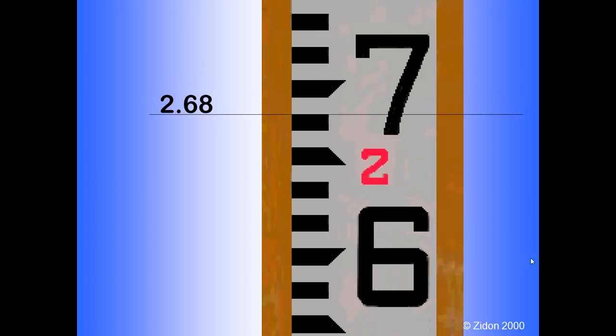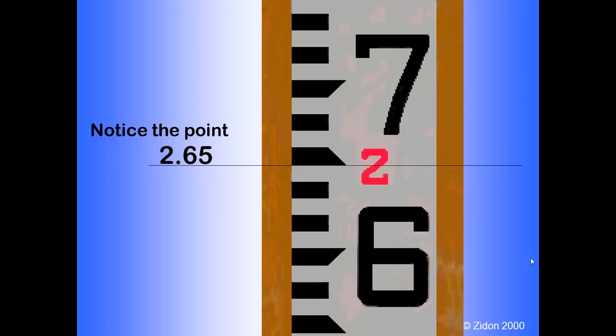Continuing downward, we have two point six eight, two point six seven, two point six six, and two point six five feet.